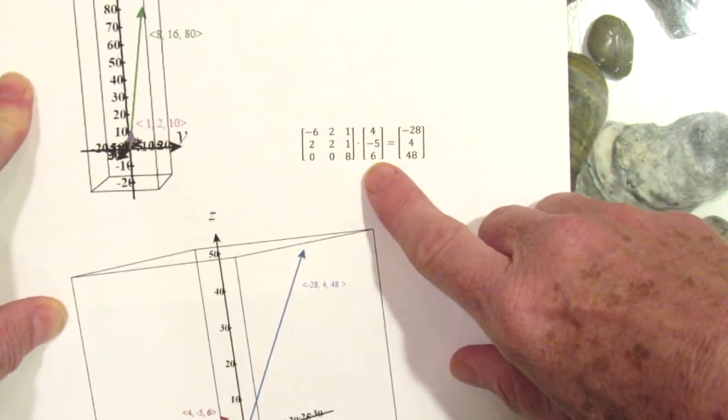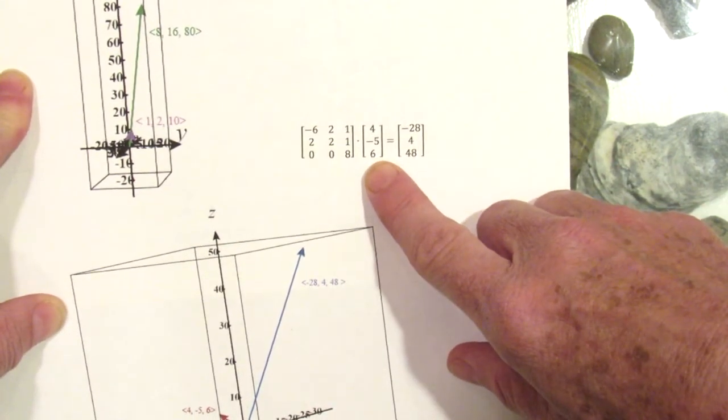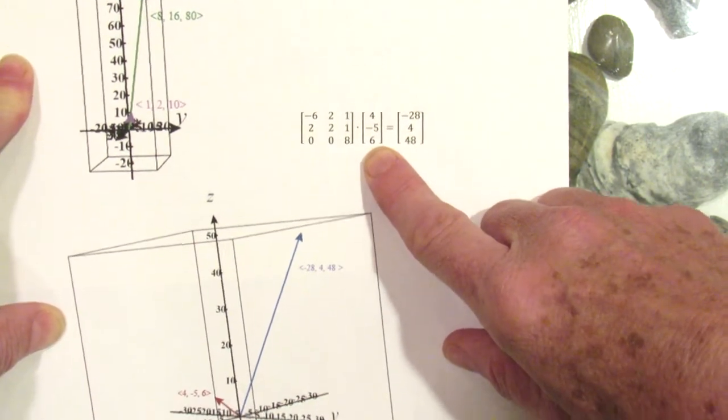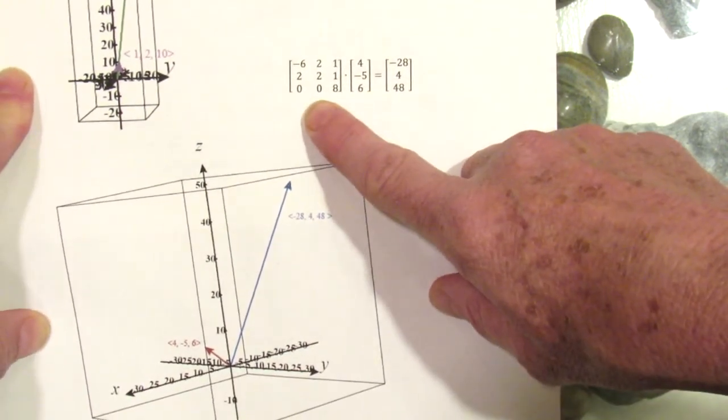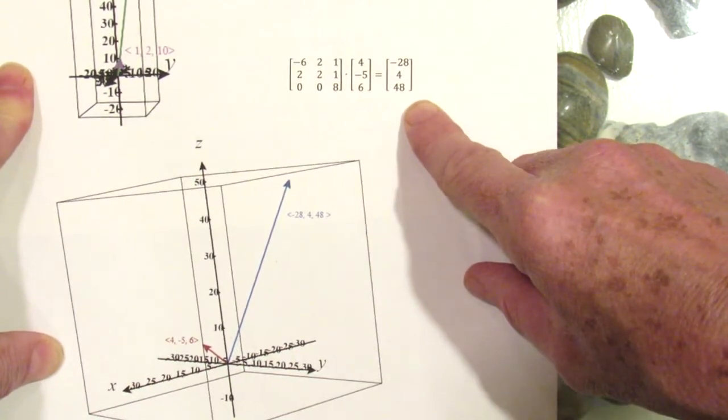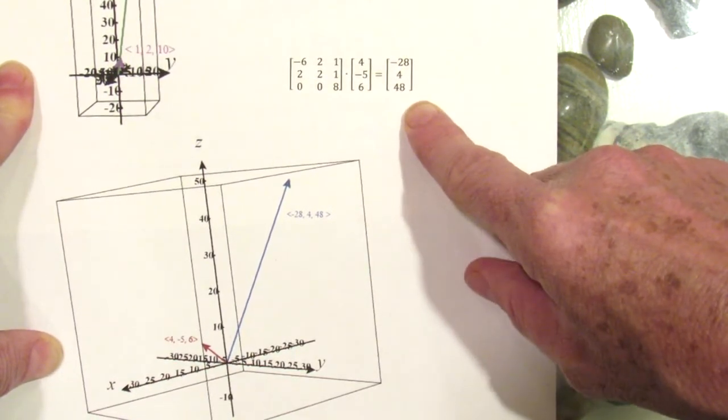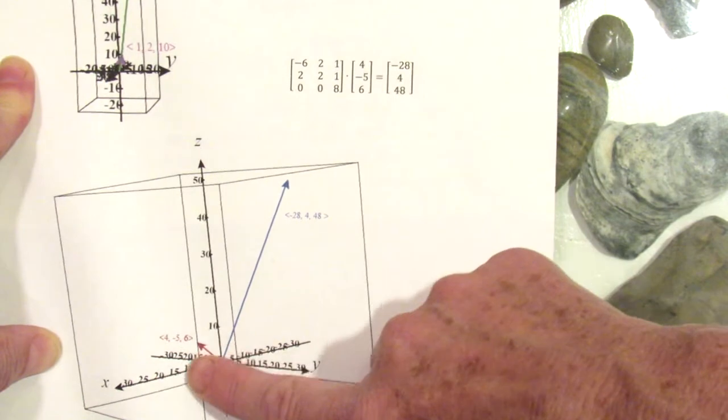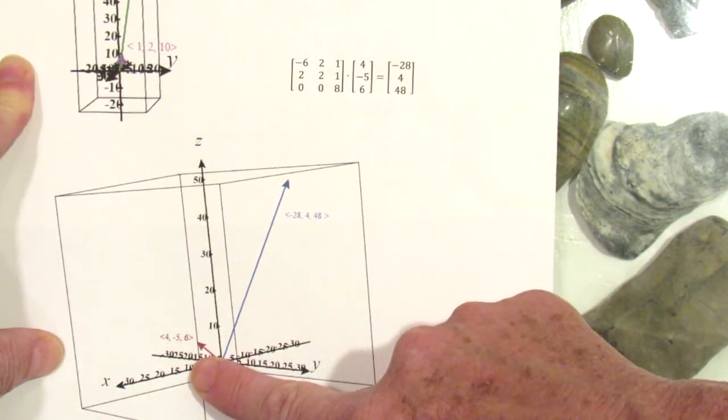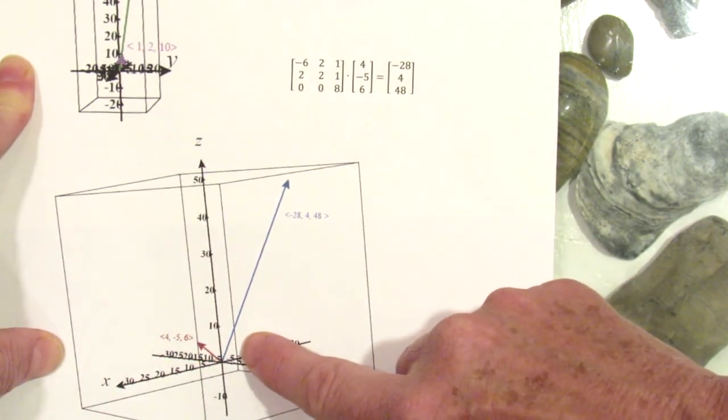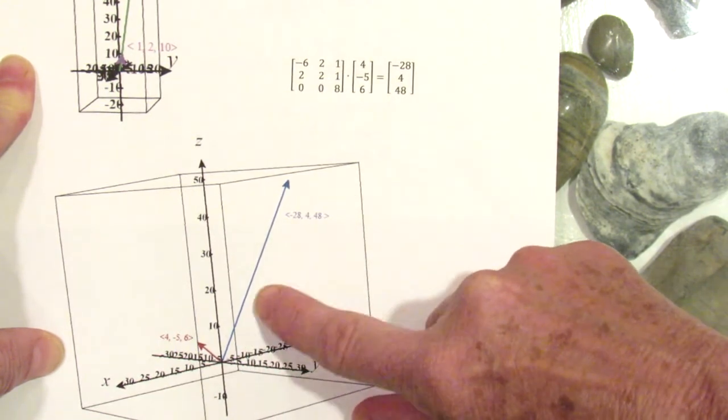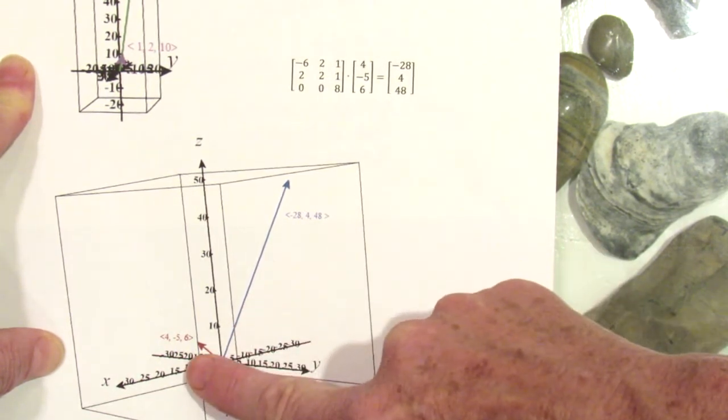If I plug some other vector that's not an eigenvector - so for example [4,-5,6] is not an eigenvector of this matrix - I get the vector [-28,4,48]. And here is [4,-5,6]; notice it's not in line, it's not in the span of this other vector, or this vector is not in the span of that vector.